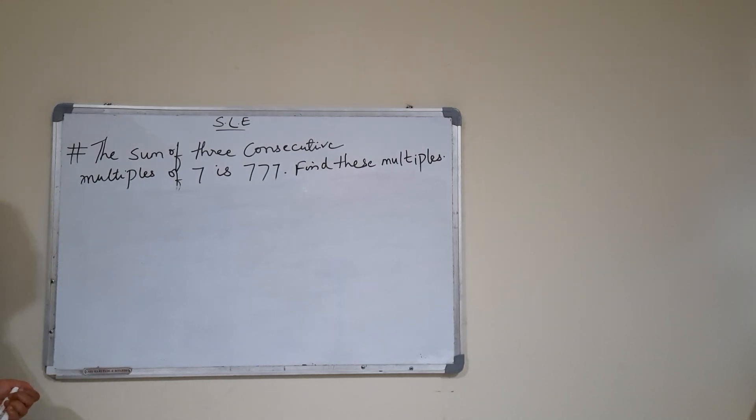Hi friends, welcome back. Today I am teaching a problem from simple linear equations. The problem is: the sum of three consecutive multiples of 7 is triple 7. Find these multiples.